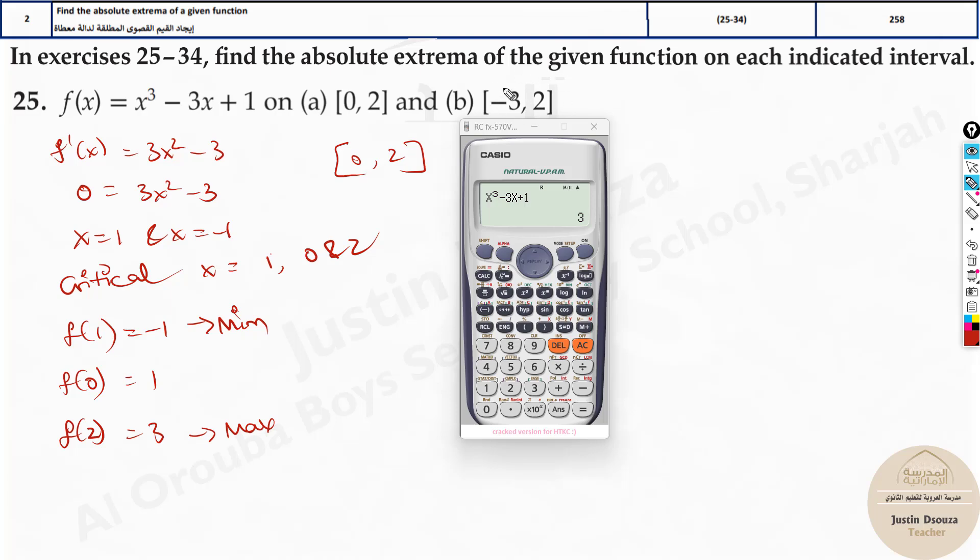Same thing can be tried in the next interval. The critical numbers would be minus 3, 2, and minus 1 because minus 1 also falls in this interval. You will have to do f of these three. You have to do f of 1, f of minus 1, f of minus 3, and f of 2.